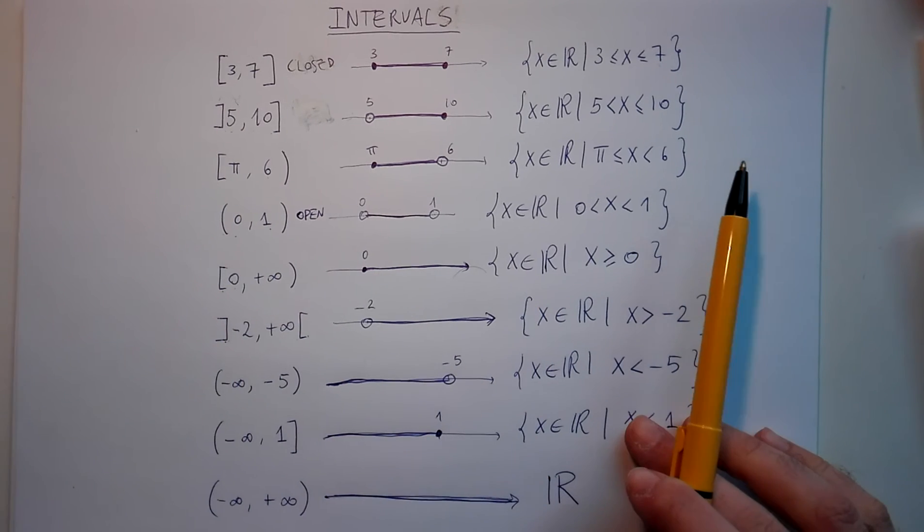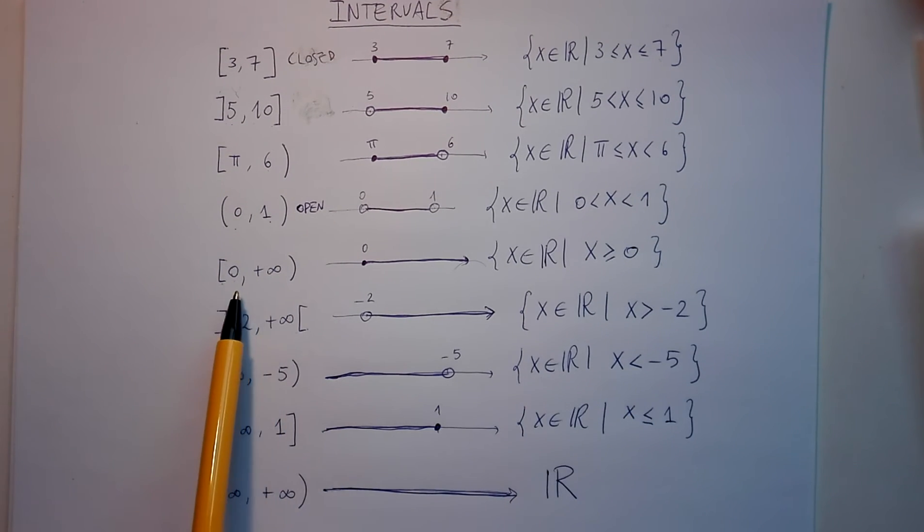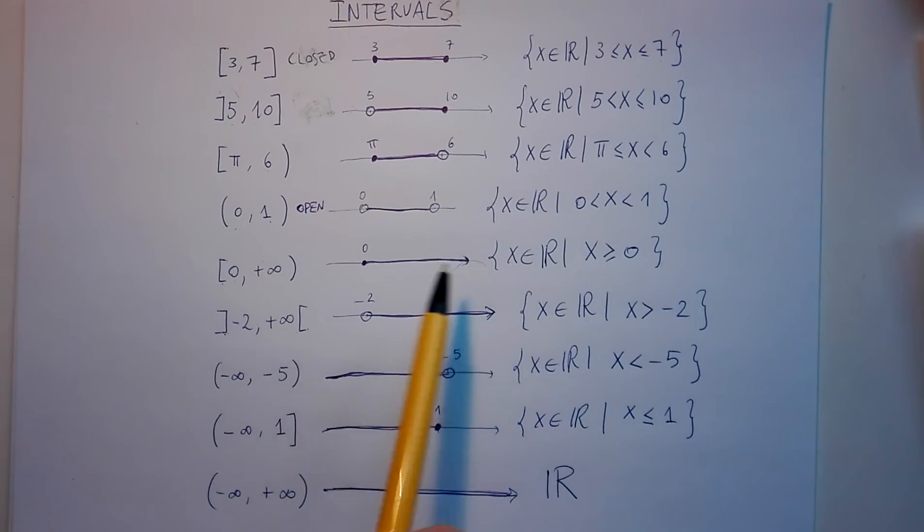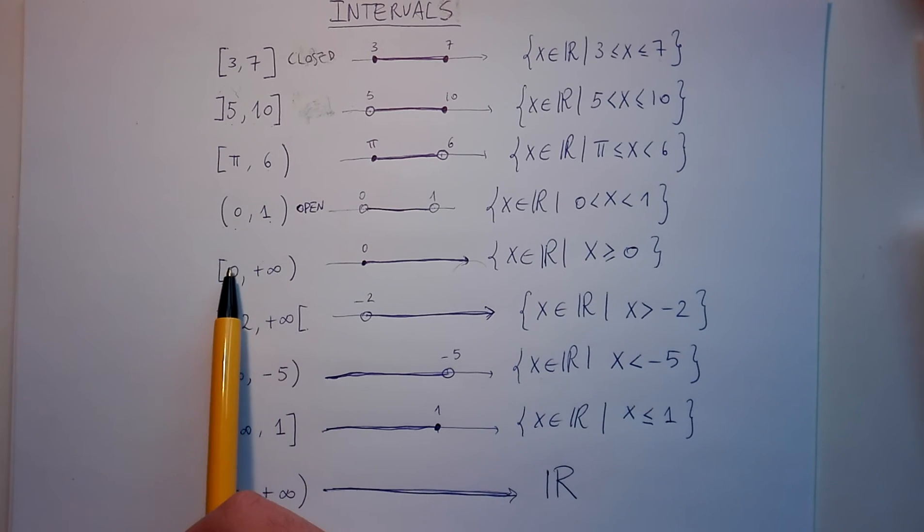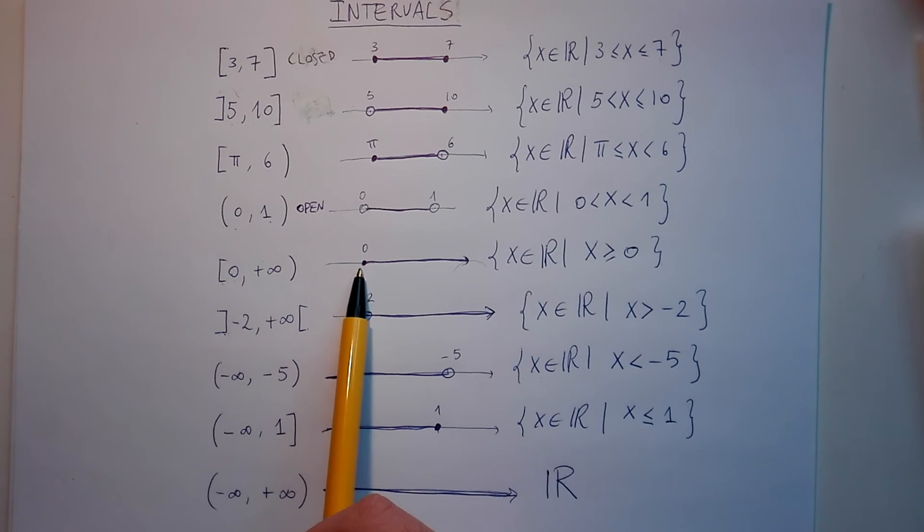You can write the same kind of intervals using also infinity. When you have infinity, you never include the symbol infinity because, let's face it, we cannot catch the infinity. So infinity is always near a normal bracket or a square bracket pointing outwards. We can have this kind of set, square bracket zero and then infinity. That means from zero included up to infinity, which means all the real numbers greater or equal than zero.